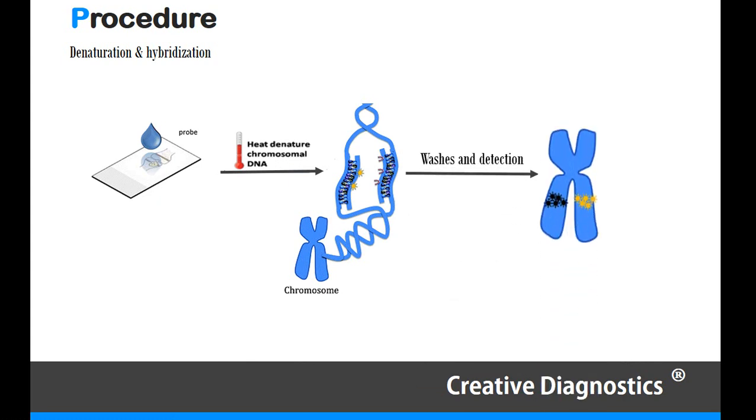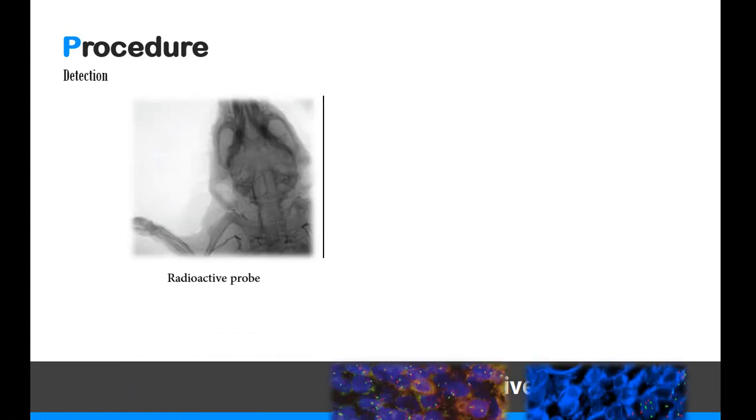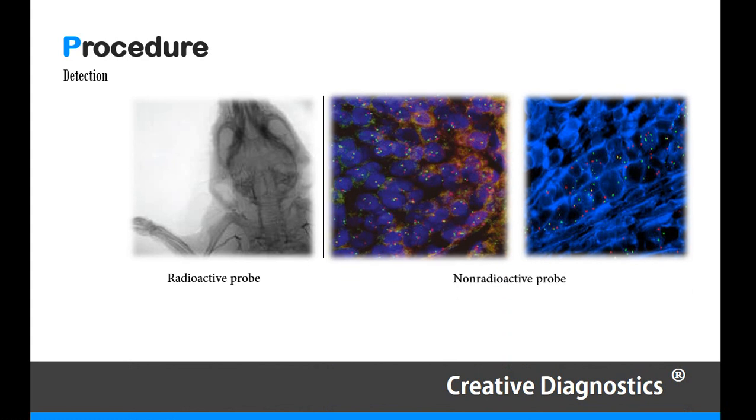Wash out unbound or loosely bound probes. Radiolabeled probes are detected by either photographic film or photographic emulsion. For non-radiolabeled probes can be detected by fluorescence microscope or specific antibodies.